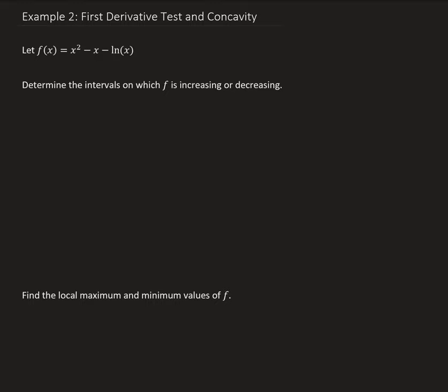The first thing is we need to find the critical values for this function. We're going to do that by taking the derivative and setting it equal to zero. So we're going to have f prime of x. Taking the derivative with respect to x, we're going to get 2x minus 1 minus the derivative of natural log x, which is 1 over x.